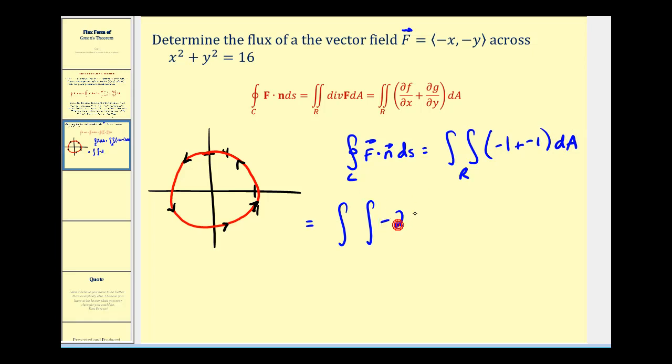So we'll have negative two, and then differential A is equal to R dr d theta, and then for the limits of integration, R will be from zero to four, and theta will be from zero to two pi.